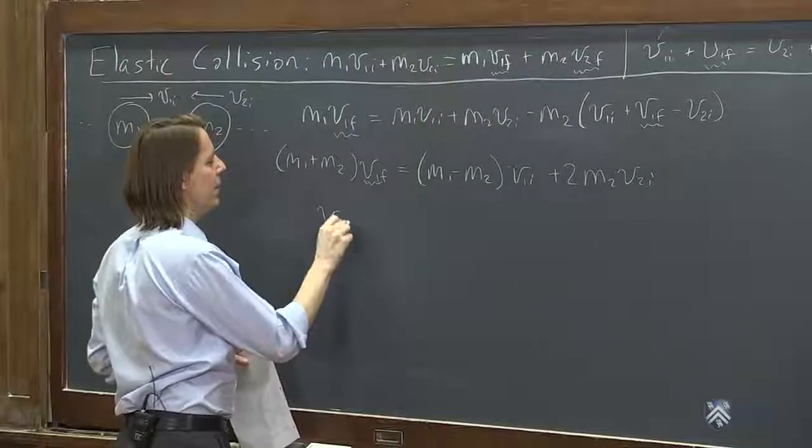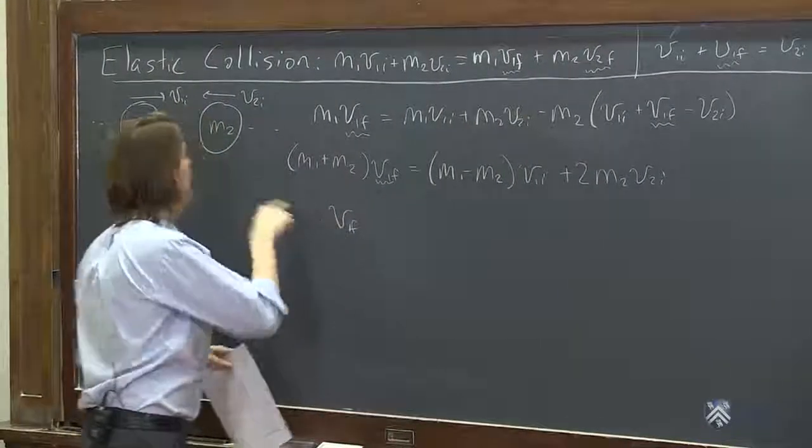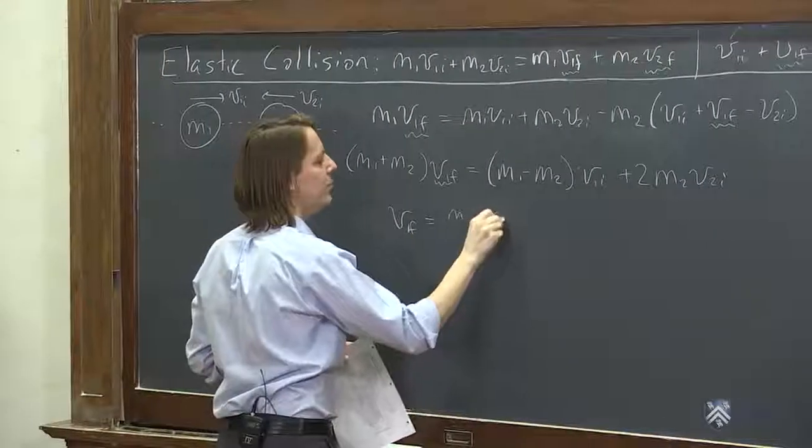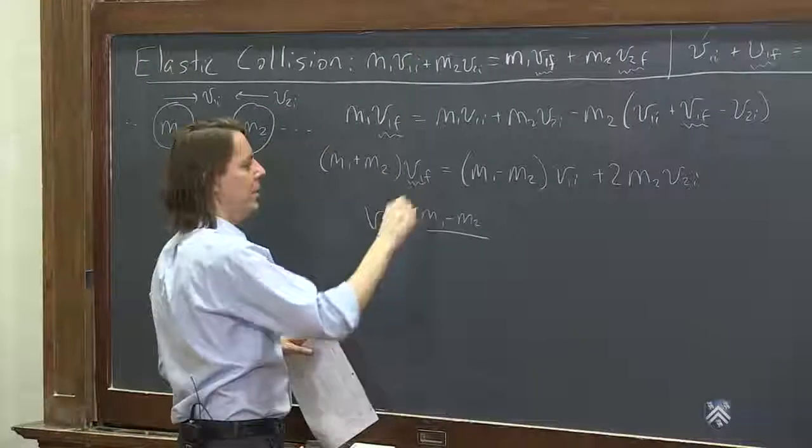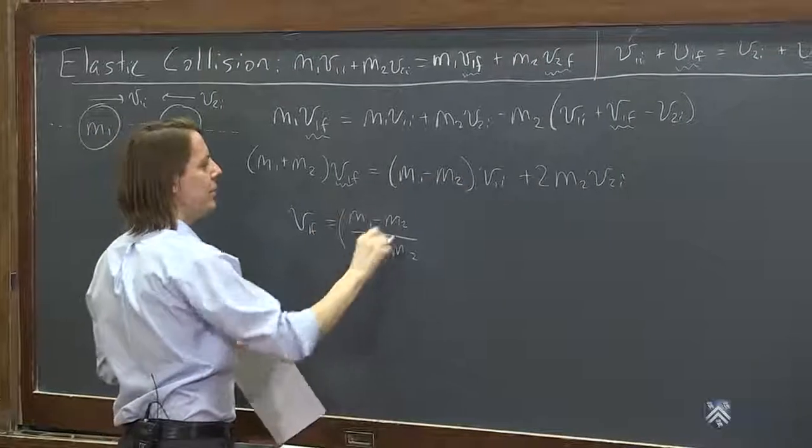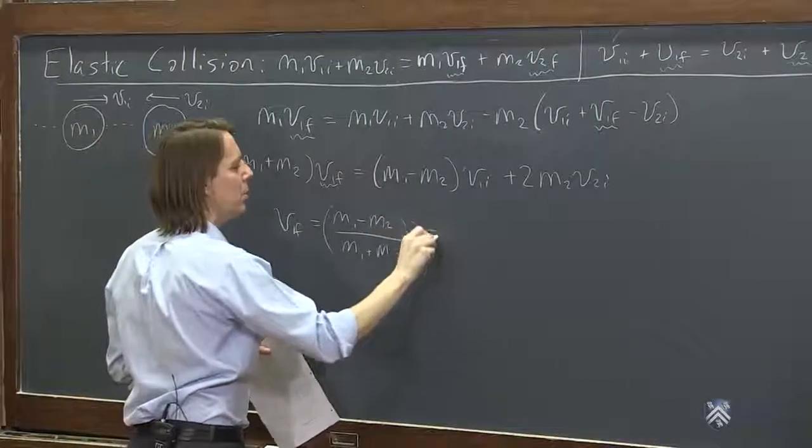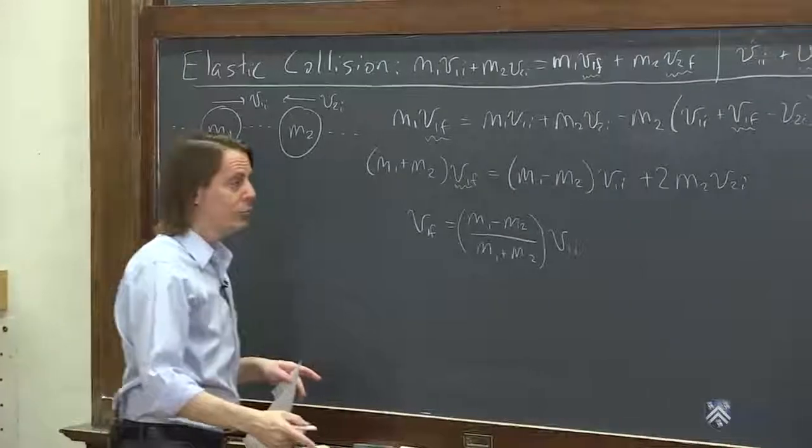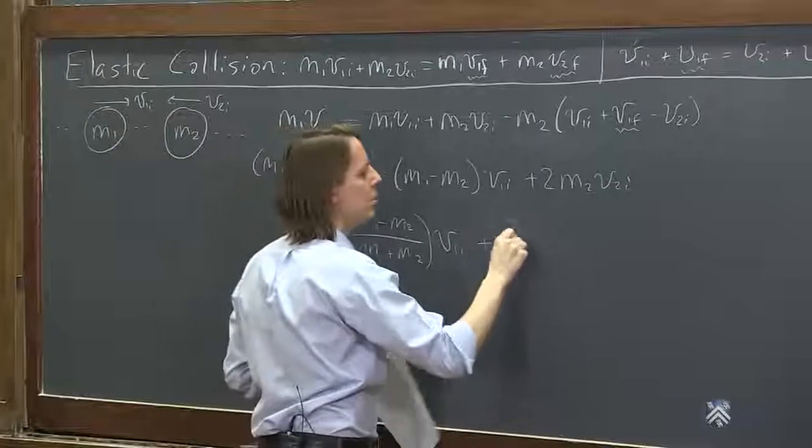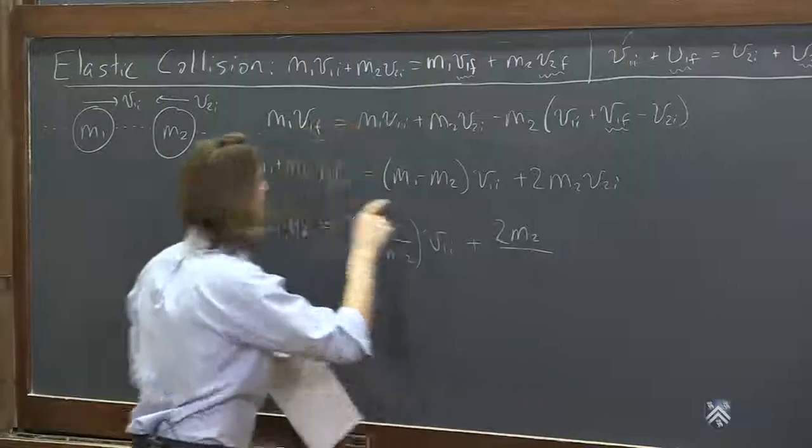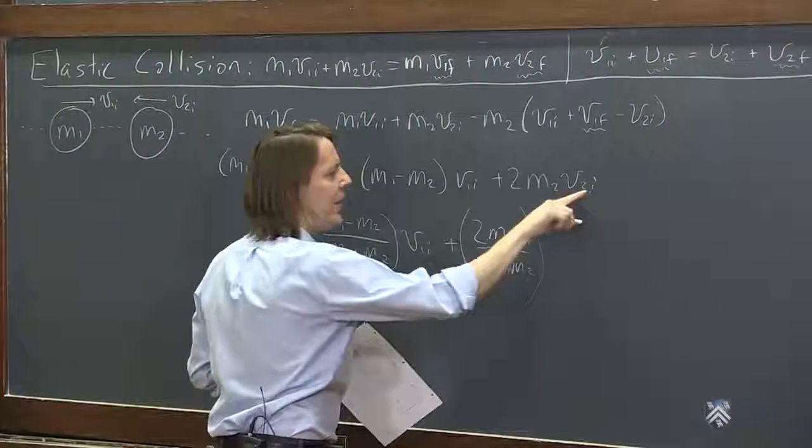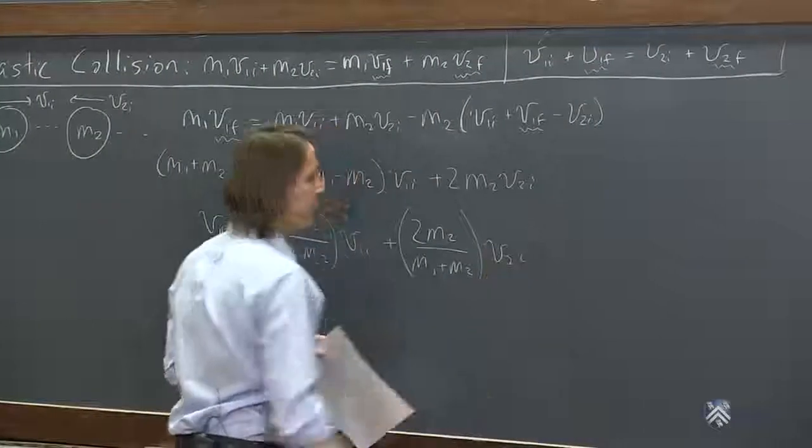All right, so we get V1f. This is the real deal. Mass one's final velocity, in this case, is M1 minus M2 over M1 plus M2, and all that times V1 initial. Plus, so it's got two big terms, plus 2M2 over, again, the sum M1 plus M2, and all that times V2 initial speed.